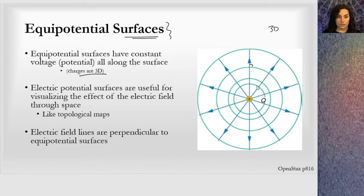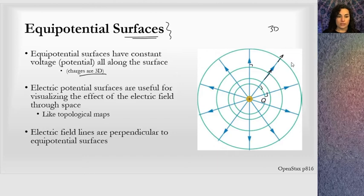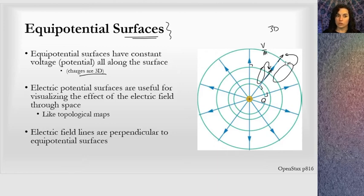Electric field lines are always perpendicular to the electric potential surfaces — you can see that here. The electric field out here is going to be a smaller vector than in here. These equipotential lines are farther apart from one place to another. Where they're closer together, you're going to have a larger electric field — a larger volt per meter — as opposed to farther out where you'll have a smaller electric field and a smaller volt per meter.